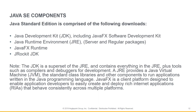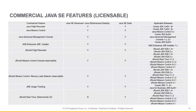Now we're getting to the licensable components — the Java SE commercial features. In the left column we see the name of the component, and in the middle two columns, the components are mapped to the commercial Java license: either Java SE Advanced, Advanced Desktop, or Java SE Suite. Since these components provide additional functionality to basic Java SE, any use of these would trigger a licensing event.